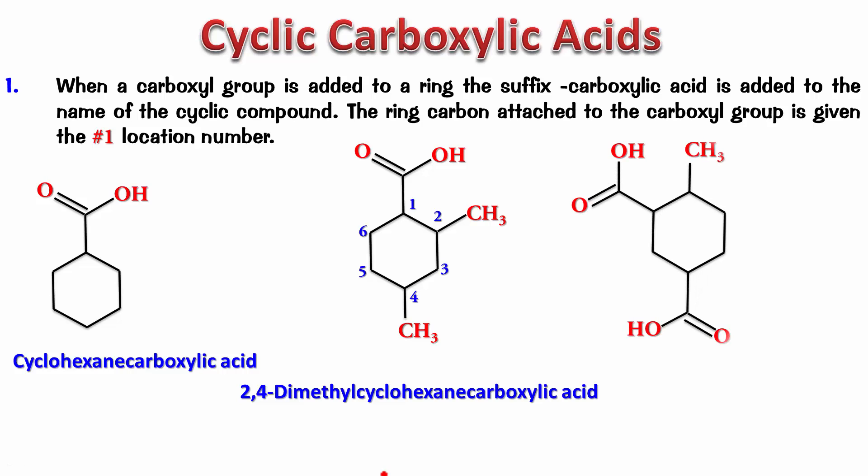Try the next one — pause, write the name, and play it back. Here you'll notice there are two COOH groups, one here and one here, so it is a dicarboxylic acid and you have to number it. You must number such that both COOH groups get the lowest possible numbers, and along with that the substituent also gets the lowest possible number.